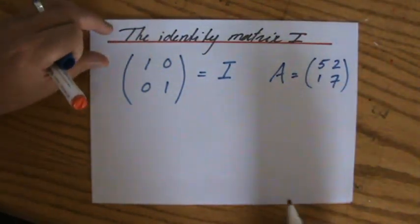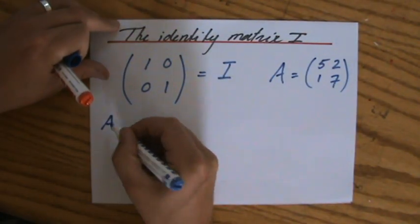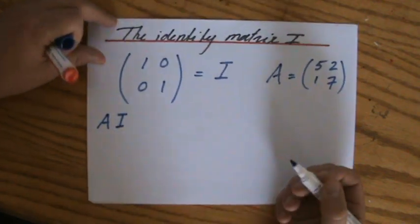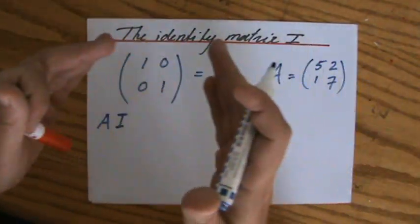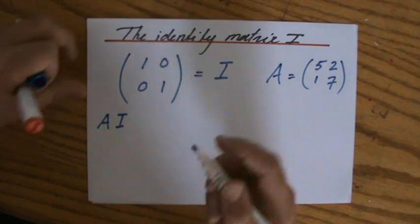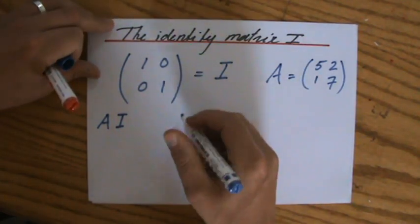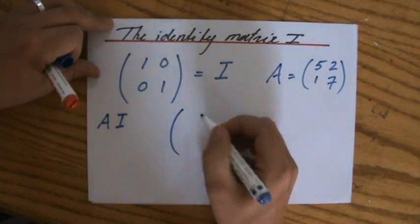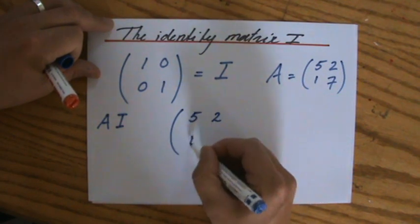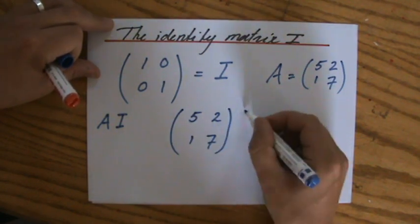And now the question is, what is A times I? So what is a matrix multiplied by the identity matrix? Now let's find out. We know how to multiply a matrix by another matrix. I've showed you in my previous videos. We'll go a little bit quicker with that now.